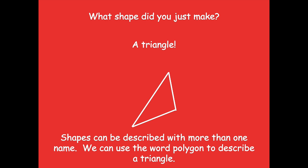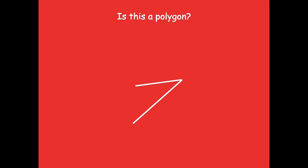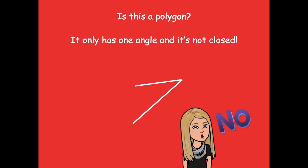Shapes can be described with more than one name — we can use the word polygon to describe a triangle. So how many sides meet this one? If I have this side right here, how many sides meet this one side? Well, only one, because this line right here meets it. Is this a polygon? No, it sure isn't — it only has one angle and it's not closed, so that can't be a polygon.